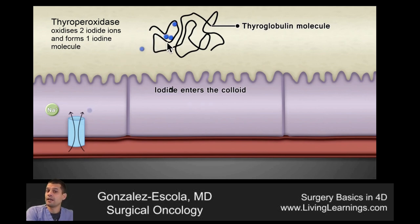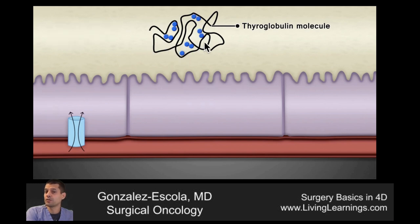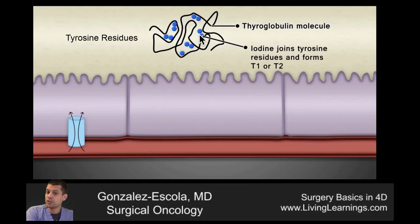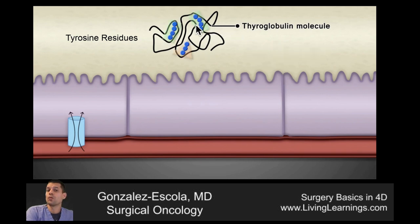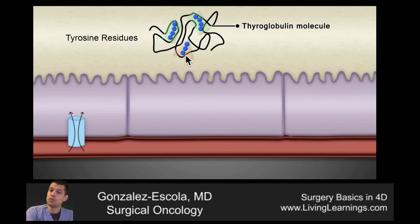These iodine molecules then attach to the tyrosine residues within the thyroglobulin molecule. The tyrosine residues can accept either one or two of these iodine molecules, and these are called T1 or MIT, or T2 or DIT. These T1s and T2s fuse with each other: if two T2s are joined, the molecule is called T4; if one T1 and one T2 join, it becomes a T3 molecule.